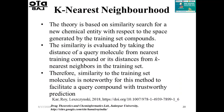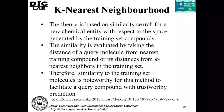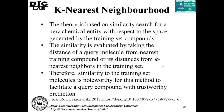K-nearest neighbor is based on the similarity principle. The new chemical entity's location in the space with respect to training set compounds is detected, and similarity is evaluated by taking the distance of the query molecule from the nearest training compound or from K-nearest neighbors in the training set. A threshold is set below which the compound is within the domain and above which it is outside the domain.